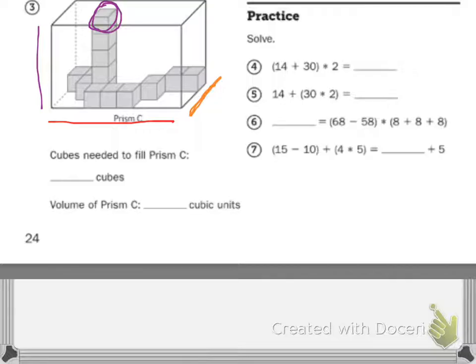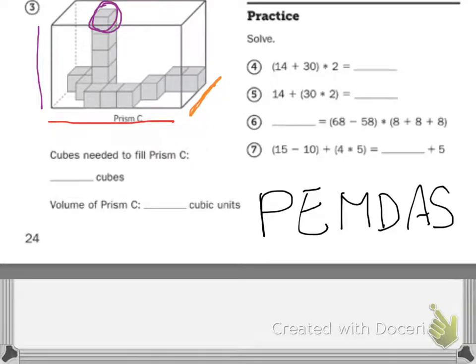Your practice is, just like we talked about earlier, order of operations. So order of operations. Parentheses, exponents, which we haven't really gotten into. Multiply, divide, add, subtract. So let's look at our first problem. I'm going to mark it in red. I have a parenthesis, so I have to do that first. Fourteen plus thirty is forty-four. I don't have any exponents. I'm going to cross it out. But now I can multiply. So forty-four times two equals... Two times four is eight. Two times four is eight. Now you have eighty-eight.